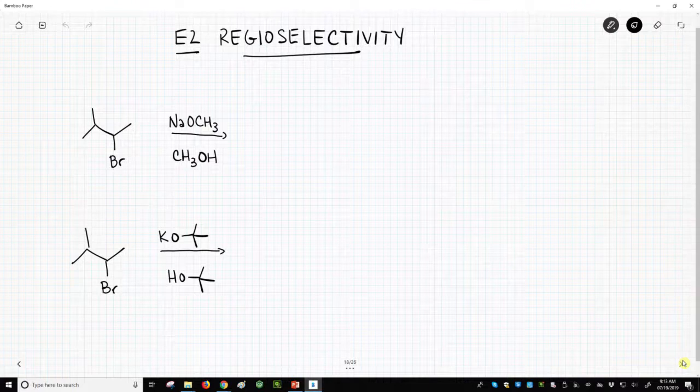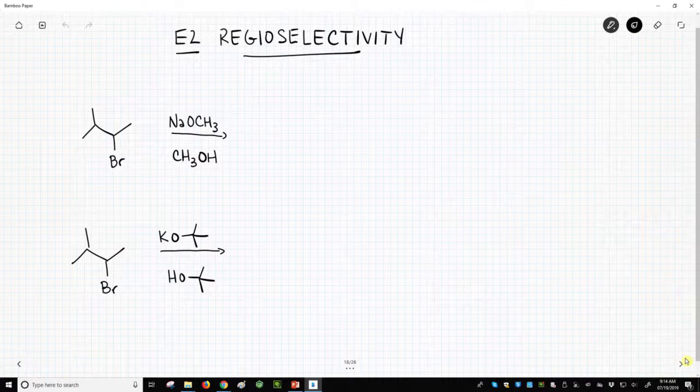In regioselectivity, you have the same process that occurs in a different place in the molecule, a different region of the molecule. It's how much control or how selective is that process. We talk about its regioselectivity, and this is important for the E2 reaction.